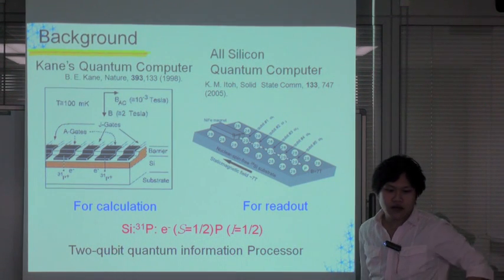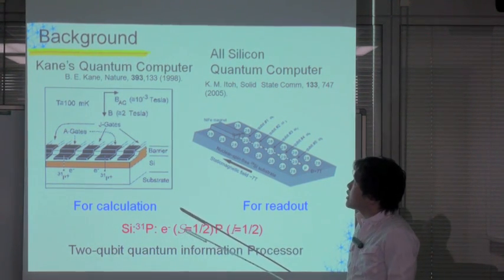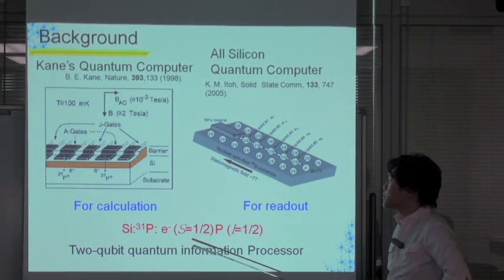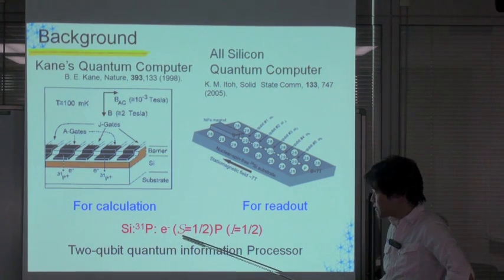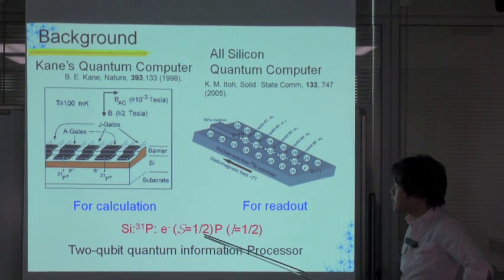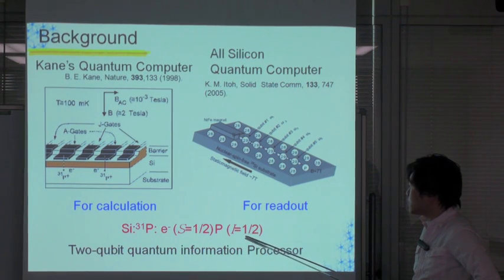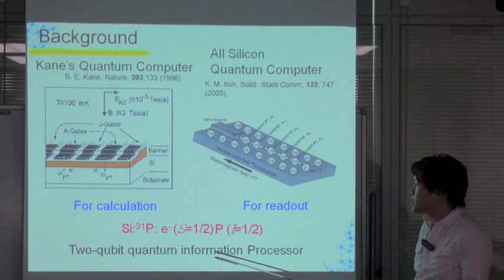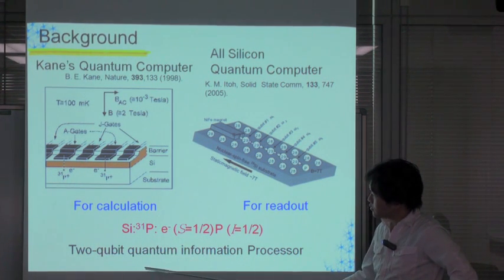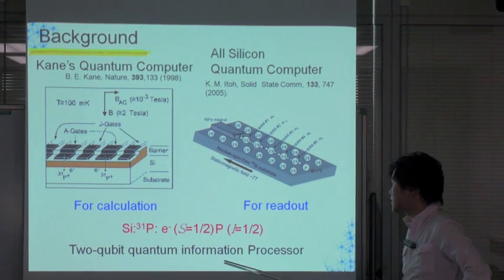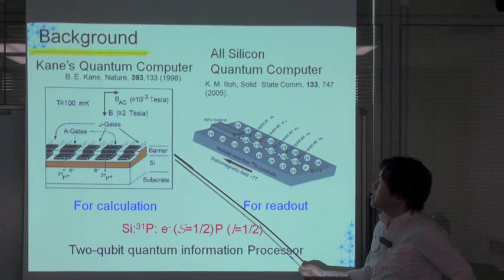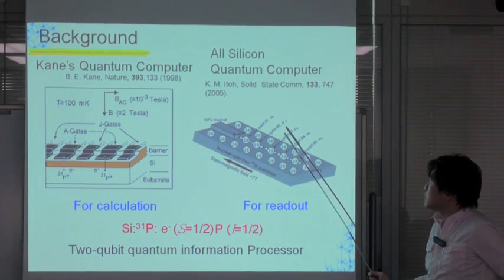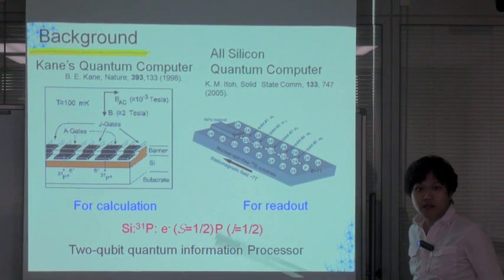The background of our study is to realize quantum computers using phosphorous donor in silicon. Phosphorous donor in silicon has one electron spin with S equal one half and one nuclear spin with I equal one half. These spins are used as qubits. Therefore, phosphorous donor in silicon can be viewed as a two-qubit quantum information processor. For example, Kane's quantum computer uses these spins for calculation, and all-silicon quantum computers use these spins for readout.